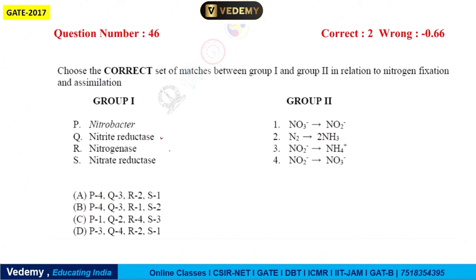Nitrogenase converts N2 directly to two molecules of NH3, that is ammonia. So Nitrogenase is the first or fourth option — the other two options are eliminated. Next, Nitrobacter — what is the work of Nitrobacter? Nitrobacter is mainly involved in nitrification. Specifically, it helps convert NO2 (nitrite) to nitrate. So P has become 4, and P is 4 and S is 1, meaning the first option is correct here.